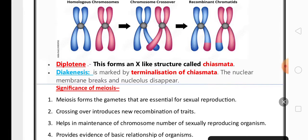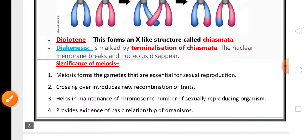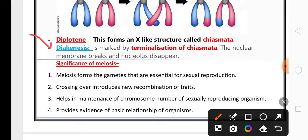In diplotene, there is formation of X-shaped chiasmata. That is the characteristic of diplotene, very important for one mark. The characteristic of diakinesis is the terminalization of chiasmata. The X-like chiasmata which helps for exchange of genetic material undergoes terminalization.